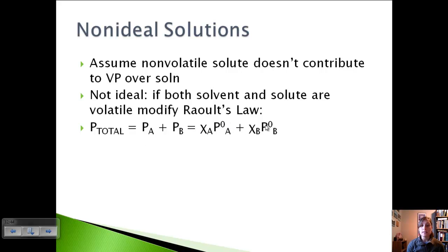And if you remember when we talked about gases in Chapter 5, we've got a mole fraction of A times the observed vapor pressure of A by itself plus the mole fraction of B times the observed vapor pressure of the pure B. And so we can modify this for non-ideal situations.